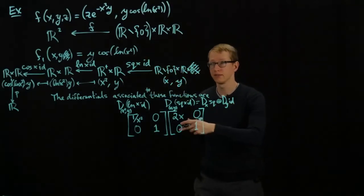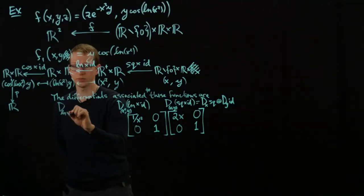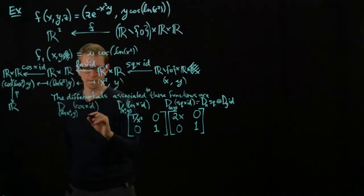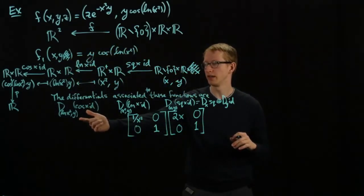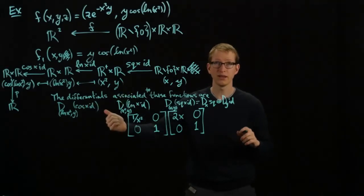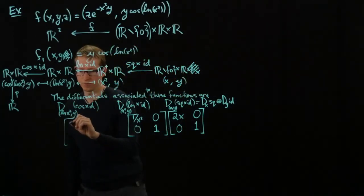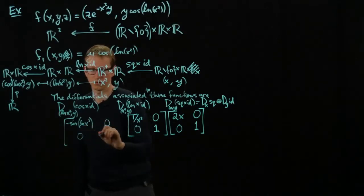The next transformation is D of (cosine × identity) evaluated at the point (ln(x²), y). We have this block sum again. The entry in the top left corner is the derivative of cosine, which is −sin, applied to the value ln(x²). So it's −sin(ln(x²)). Then [−sin(ln(x²)), 0; 0, 1].